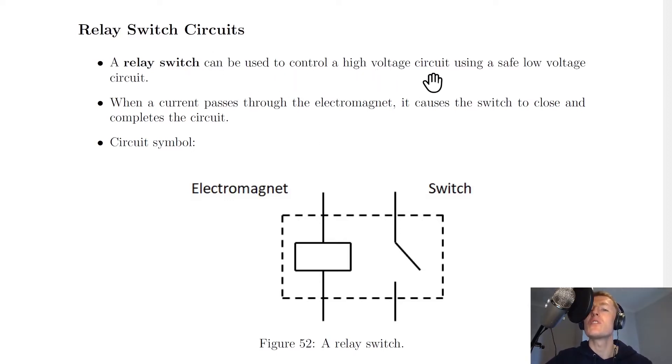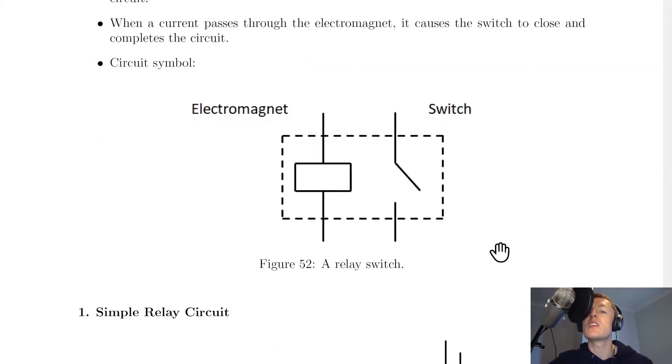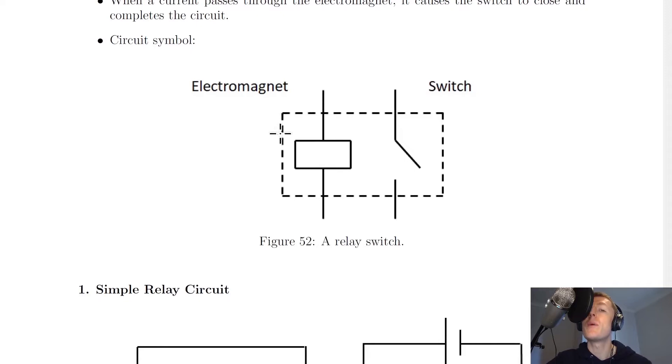used to control a high voltage circuit using a safe low voltage circuit. So it kind of acts as a safety feature. And if we look at what a relay switch is made up of, we've got two parts: it's got an electromagnet and a switch.